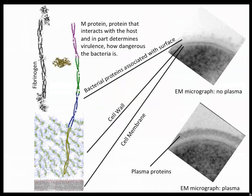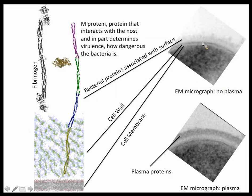The surface of the bacteria is where the action happens. There's a cell membrane, a cell wall, and bacterial proteins that are attached to the cell wall or secreted, interacting with host proteins — such as common blood proteins like fibrinogen and albumin. In microscopy, you can see a faint gray layer of long M proteins. Once you add plasma, a thick darker layer appears — that's plasma proteins completely covering the bacteria, likely as a strategy to avoid immune detection.